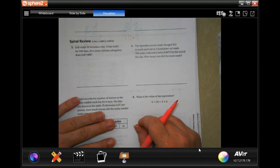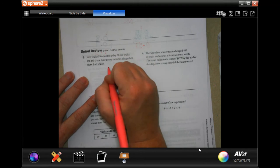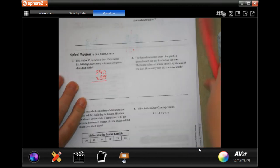Jody walks 35 minutes a day. If she walks 240 days, how many minutes altogether does Jody walk? So 240 days, 35 minutes each day. Let's multiply.